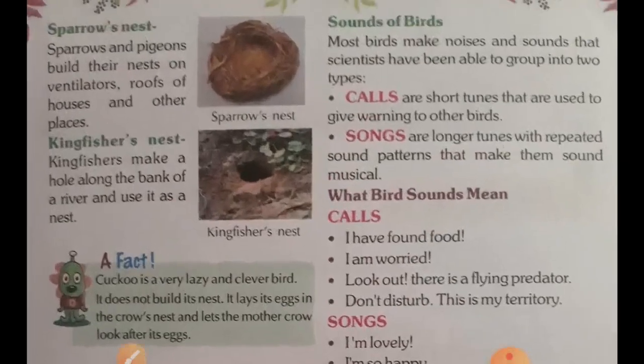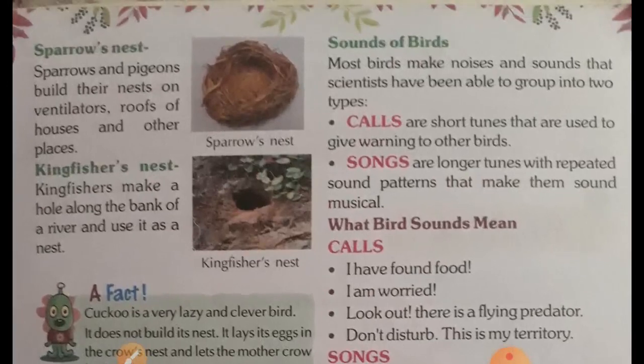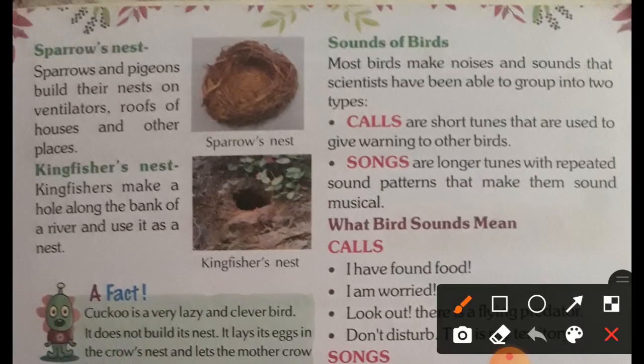Sparrows and pigeons build their nests on ventilators, the roofs of houses, and other places. The kingfisher makes a hole along the bank of a river and uses it as a nest.